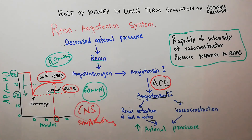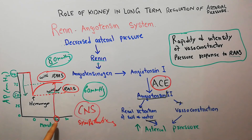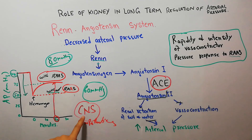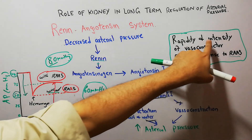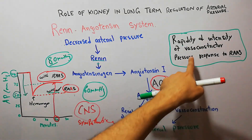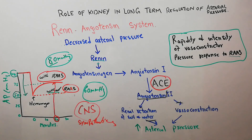The blocked system will still elevate arterial pressure through other mechanisms, but not as effectively as when the renin-angiotensin system is functional. Additionally, this system takes more time compared to the CNS sympathetic system, which is rapidly acting. That's all about the rapidity and intensity of vasoconstrictor pressure response to the renin-angiotensin system.